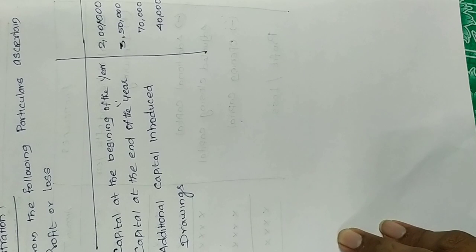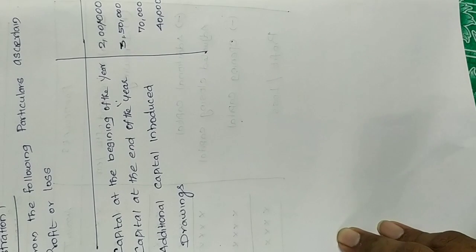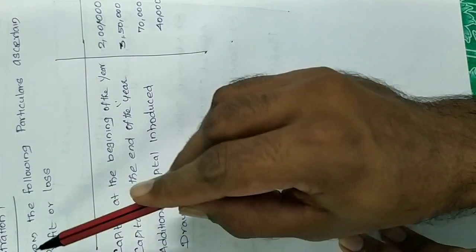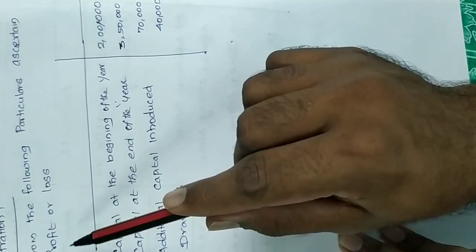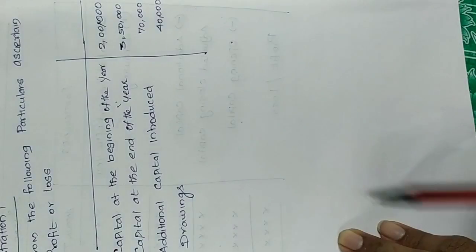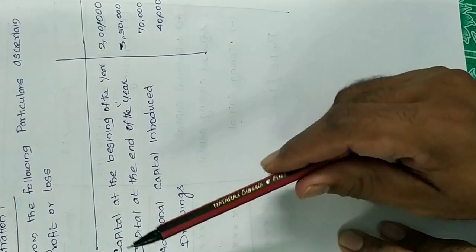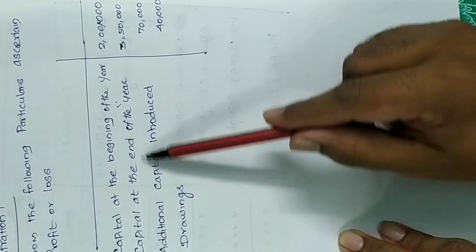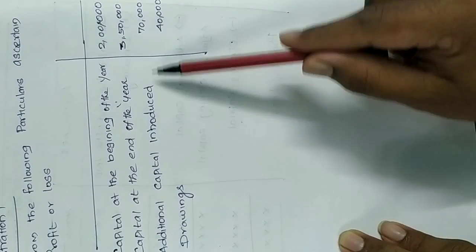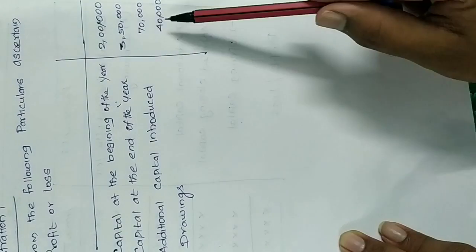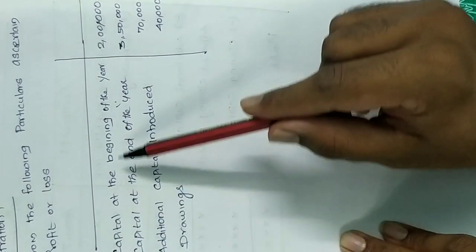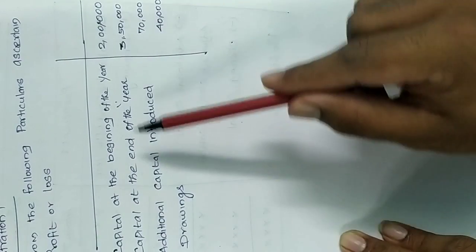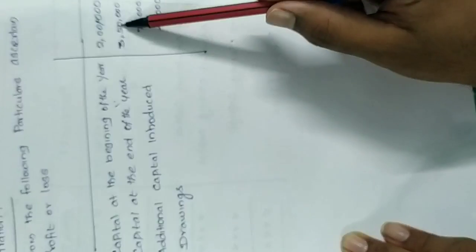Here is illustration one for the statement of profit or loss for the year ended 31st March 2007. From the following particulars, find the profit or loss: Capital at the beginning of the year is 2 lakhs. Capital at the end of the year is 3 lakh 50,000. Additional capital introduced is 70,000. Drawings are 40,000.